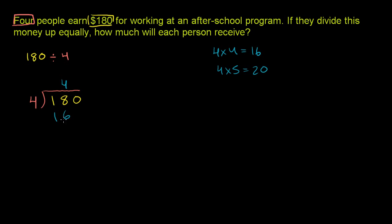4 times 4 is 16. And now we subtract. We essentially find the remainder here. 18 minus 16 is 2.